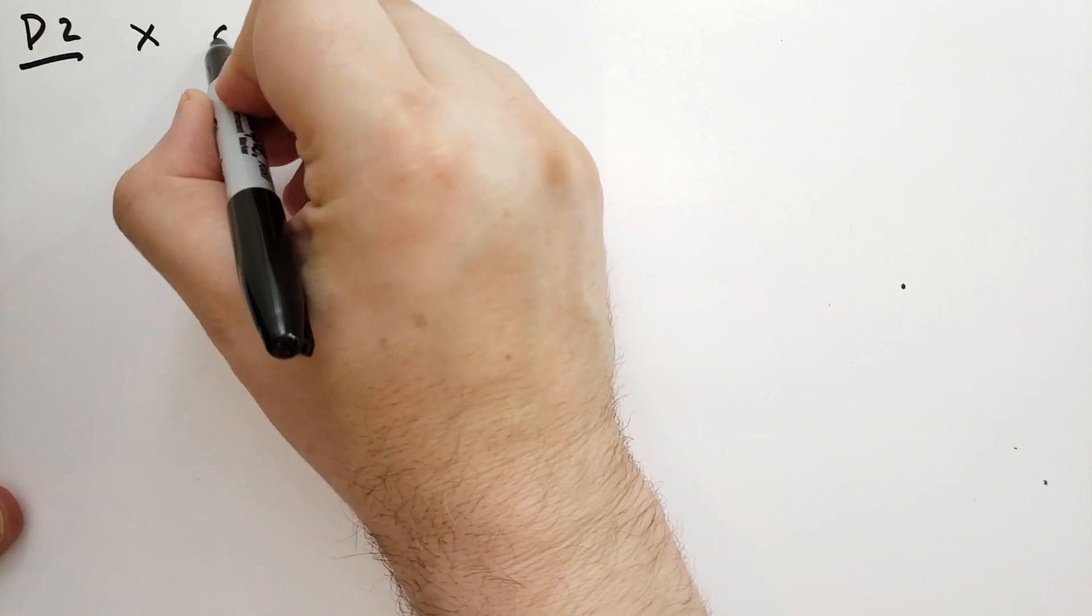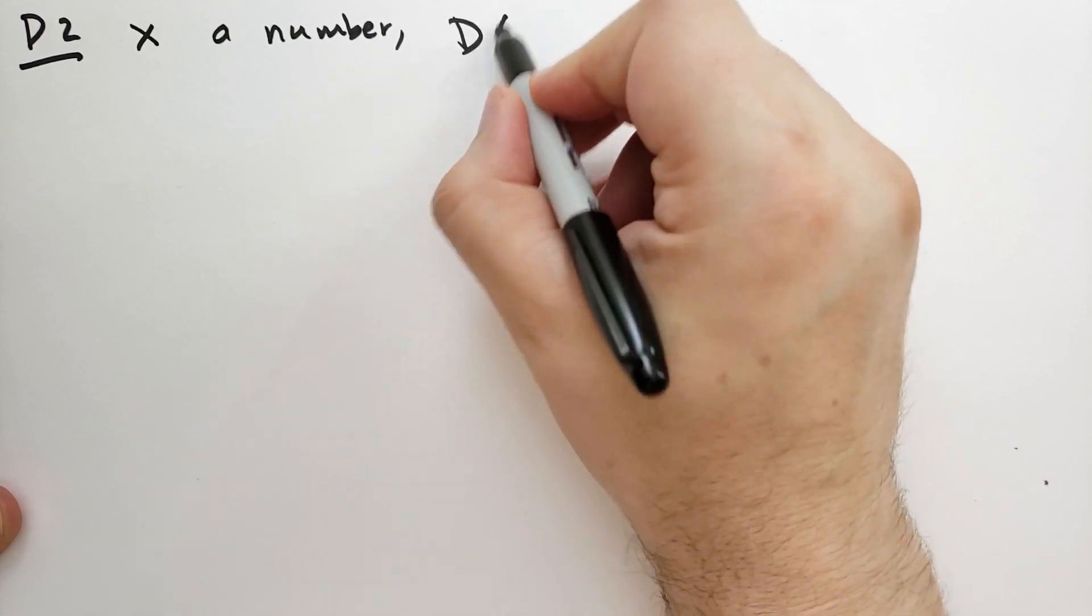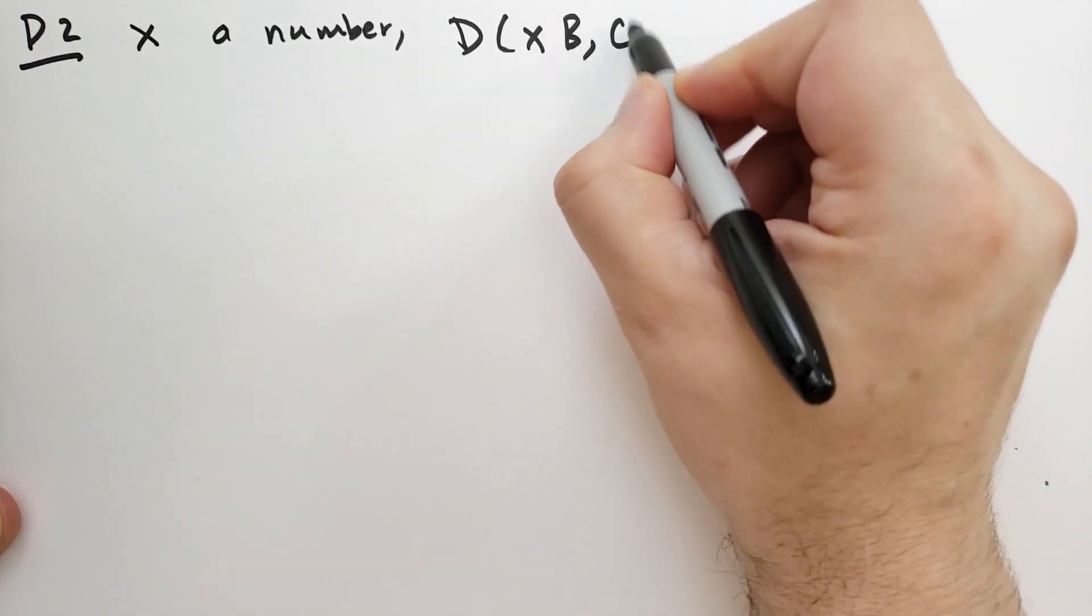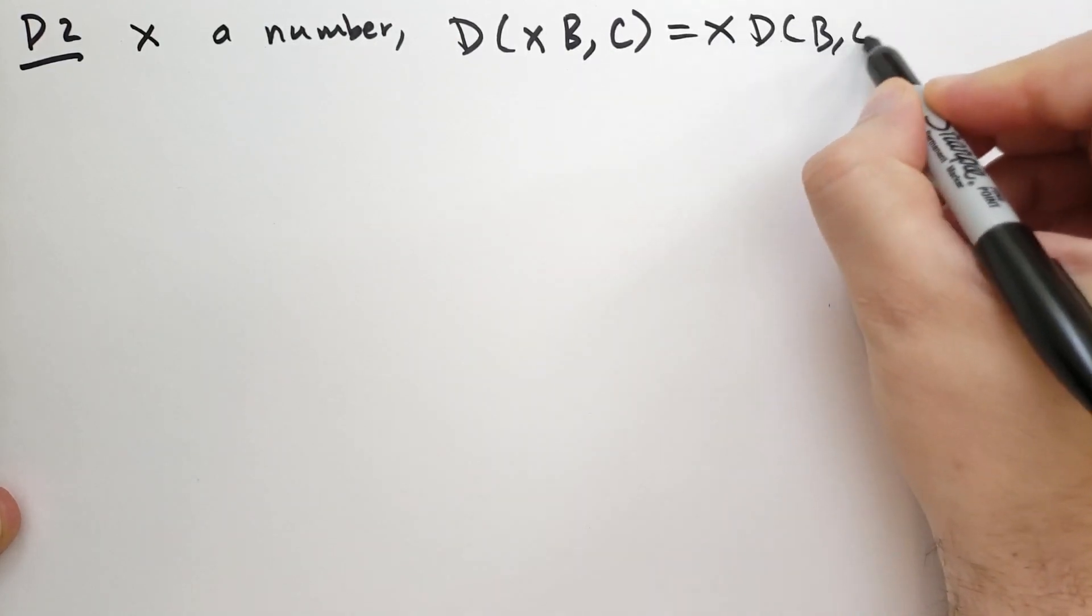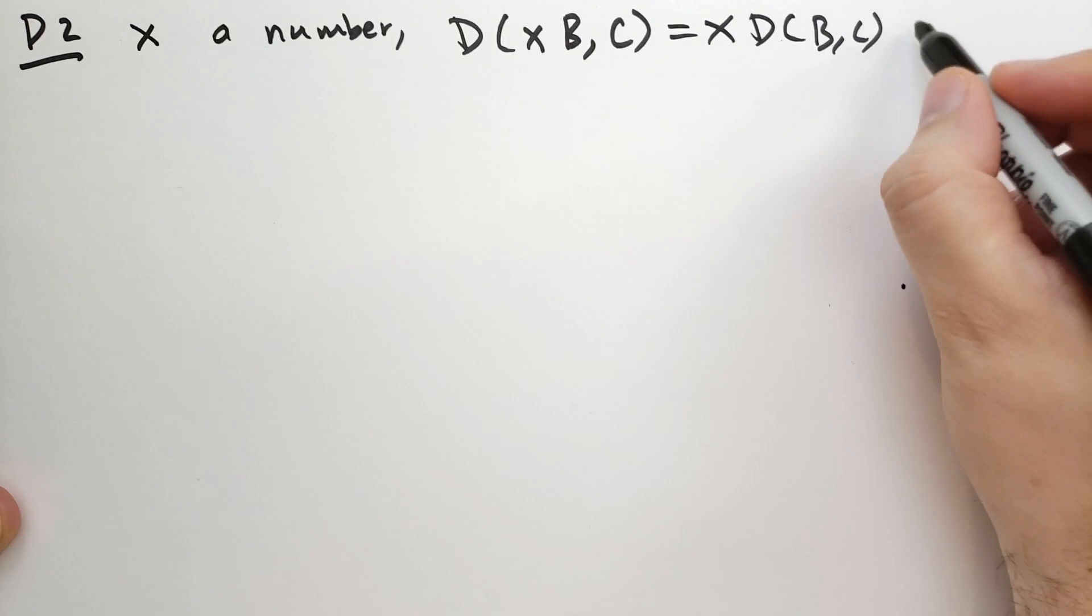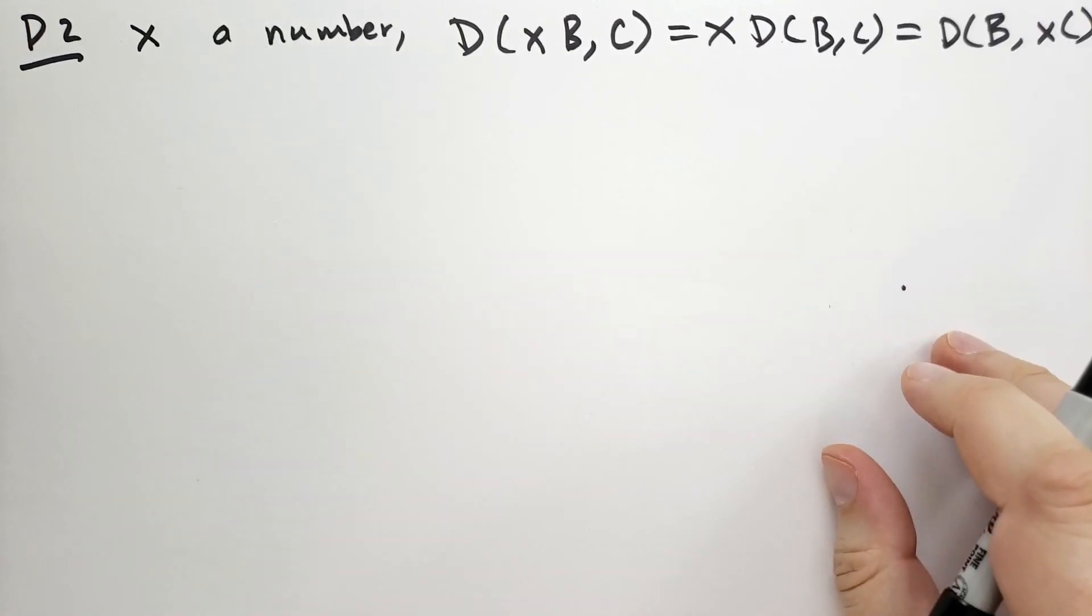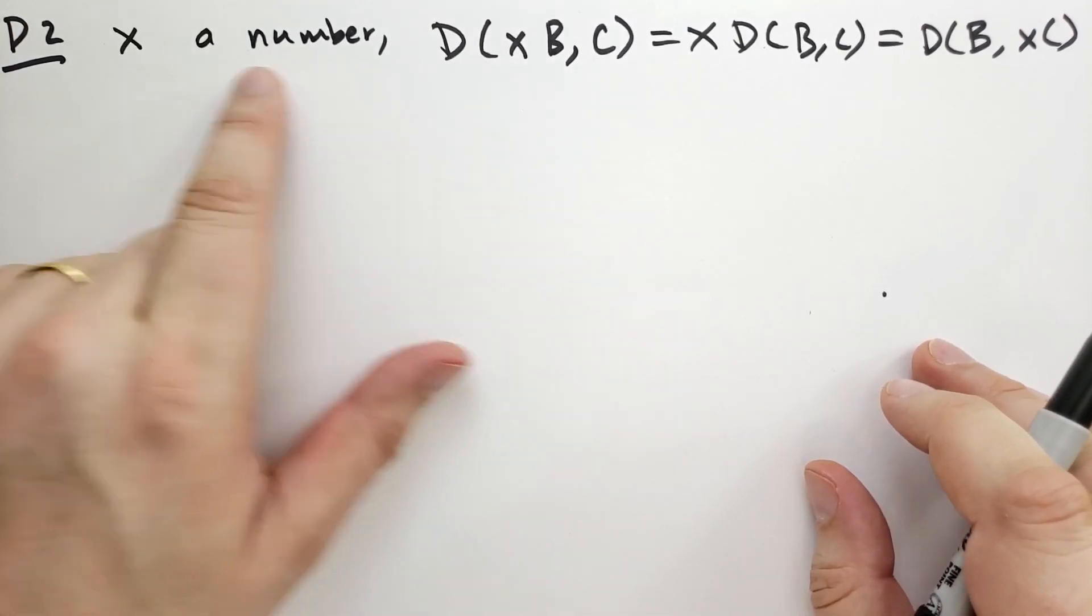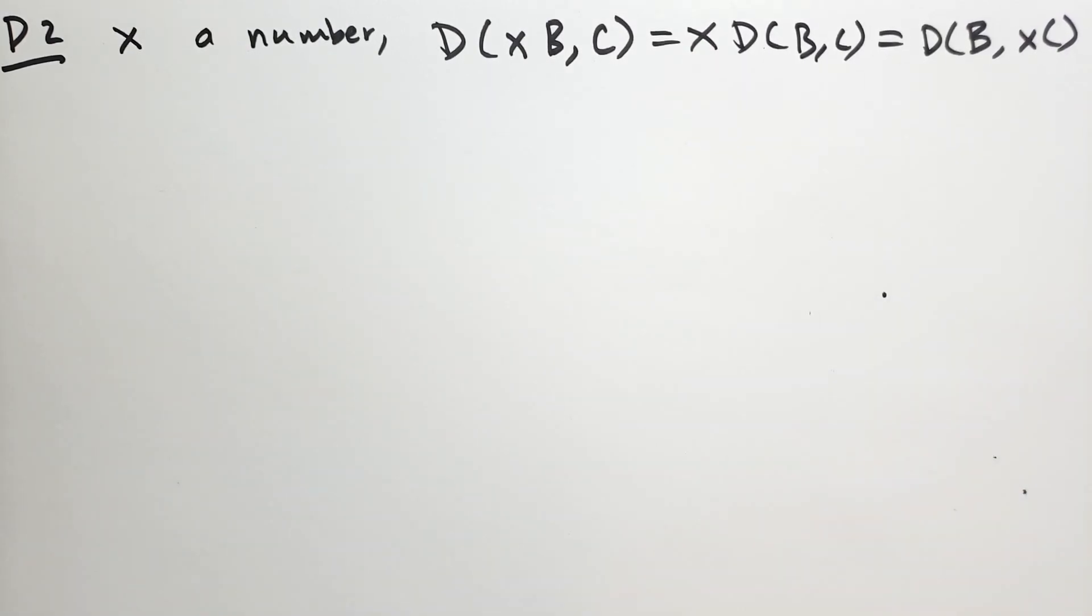Let's look at property D2. So D1 was that we could distribute the determinants. D2 says that if X is a number, then the determinant of X times one of the columns, just one mind you, not both, is the same as X times a determinant is also the same as a determinant of the first column times X times the second column. So this X factor, it's a number, it's not a matrix. It can go on the outside or it can go on the other column.